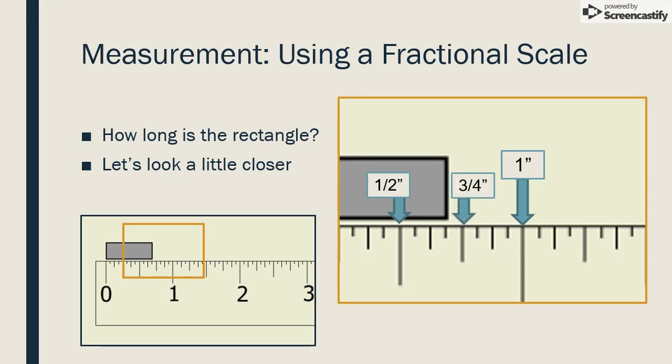Halfway between one-half and three-fourths is five-eighths, and halfway between five-eighths and three-fourths is eleven-sixteenths. So the length of the bar is eleven-sixteenths of an inch.